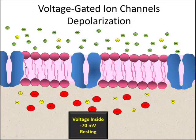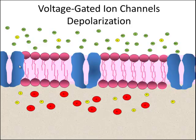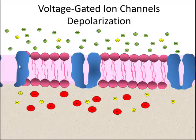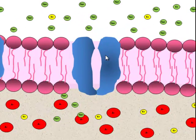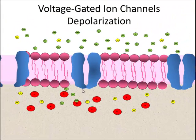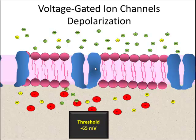Now suppose this ion channel, this sodium ion channel, opens up, and sodium comes rushing in. This affects this voltage-gated ion channel, and now the polarity is less. It's been depolarized. It's no longer negative 70 millivolts. It's negative 65 millivolts around this ion channel. That meets the threshold for this voltage-gated ion channel, and it opens up.